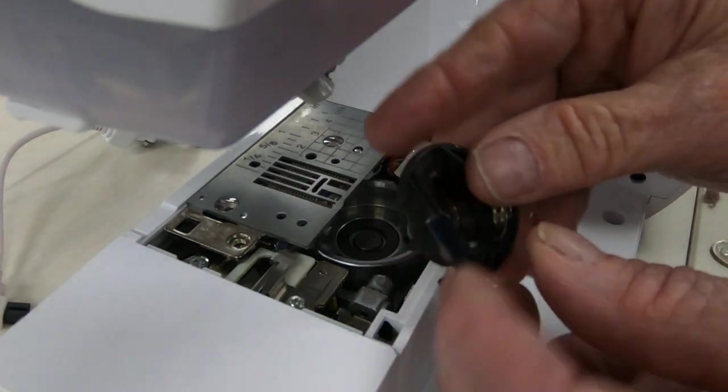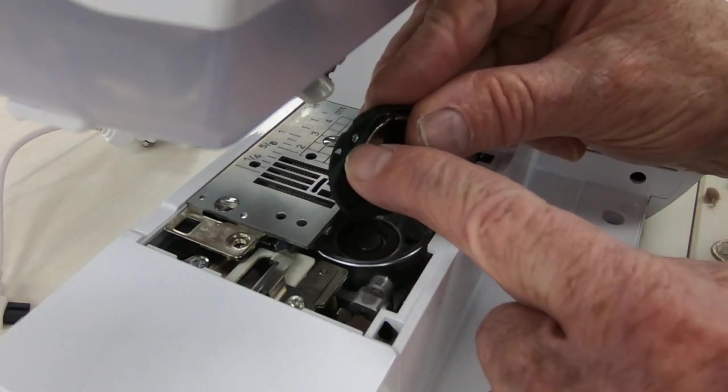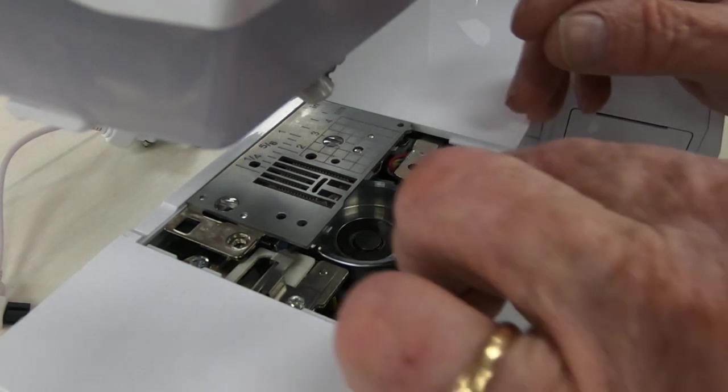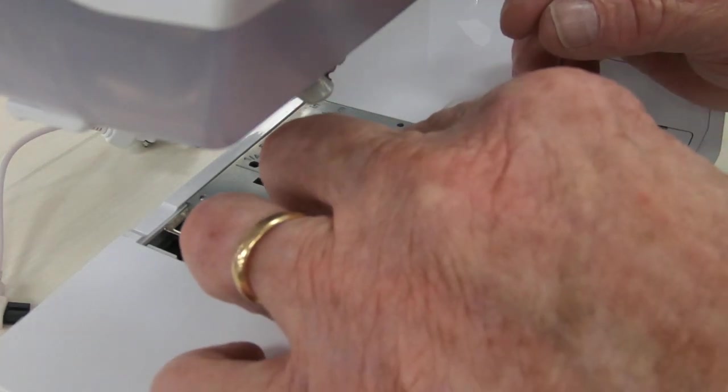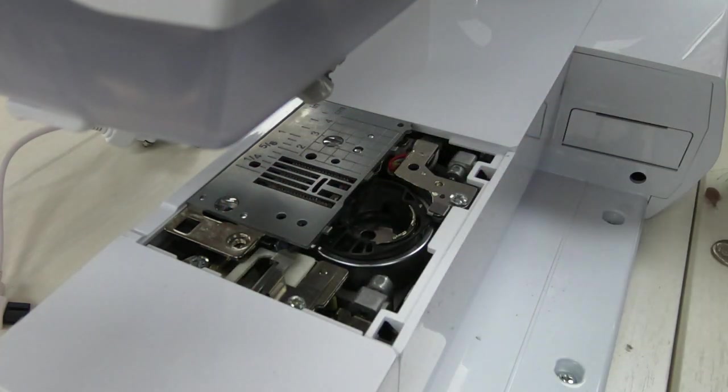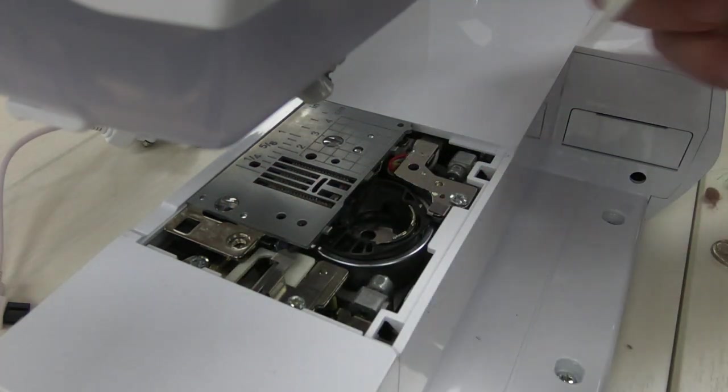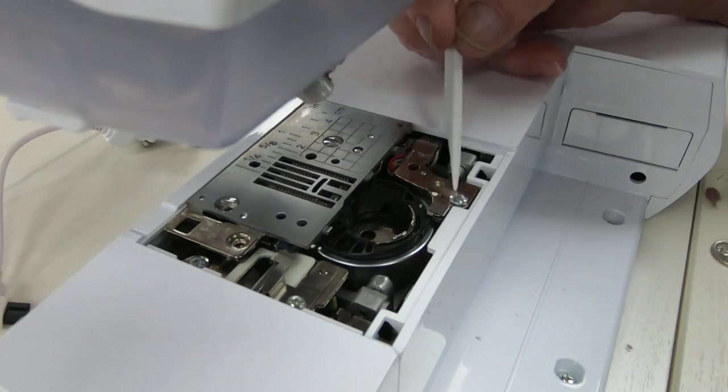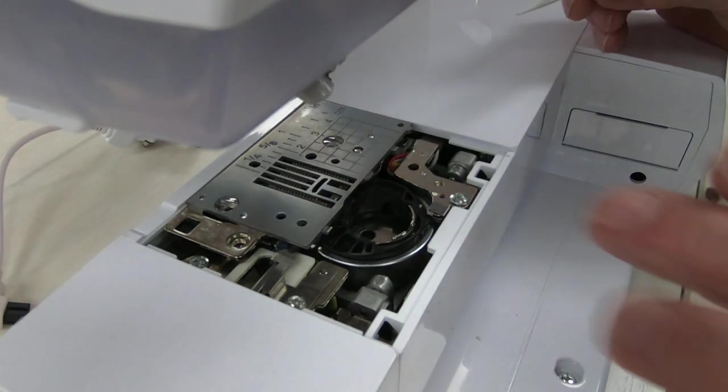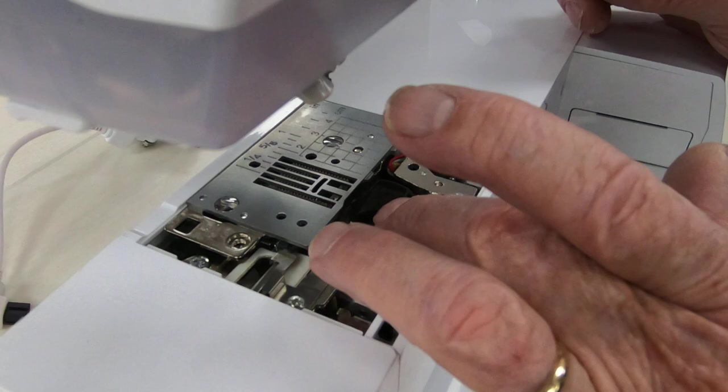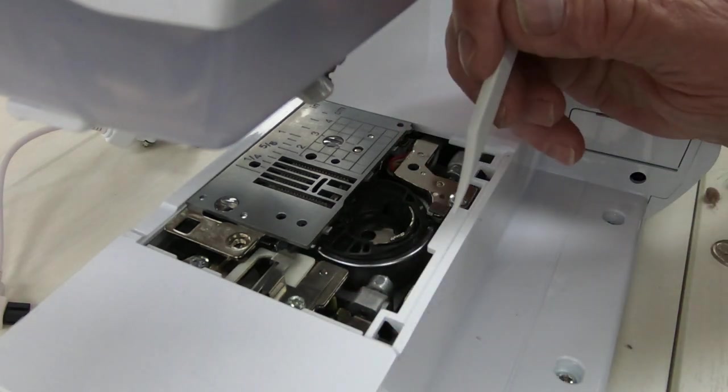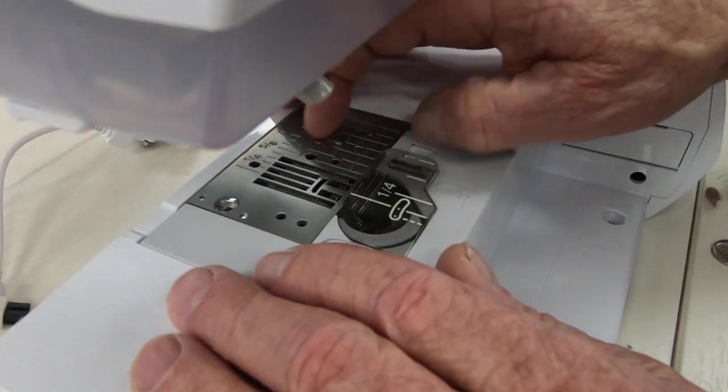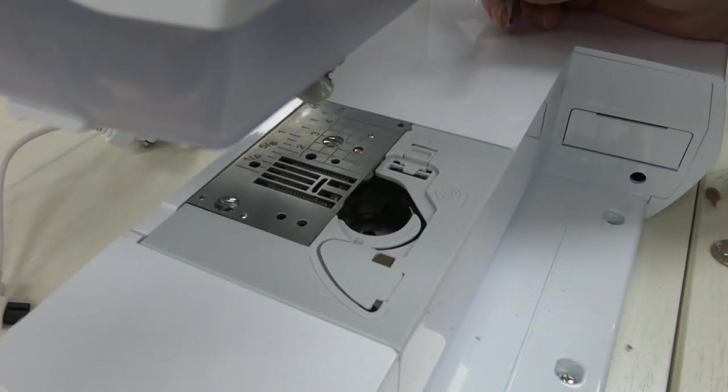When you put your bobbin in, there's a little white dot. I hope you can see it. There's a little white dot here, and there's a little white dot right here. Those dots line up. There's a little stitch finger. Let me get a pointer. There's a little stitch finger right here. And that goes against this little spring. And your white dots line up. You'll have a little bit of a wiggle jiggle. Not much. That's so your thread can pass through that stitch finger. You then snap on your cover and you're ready for business.